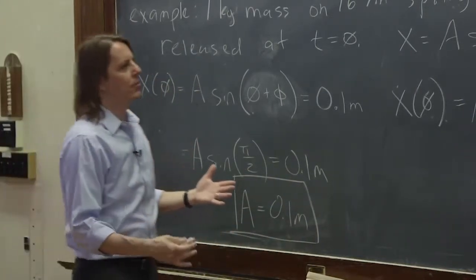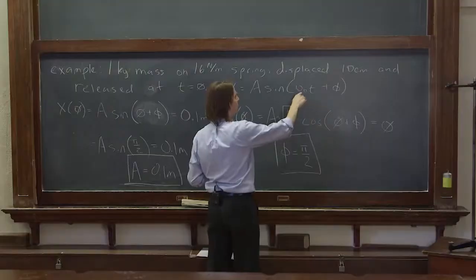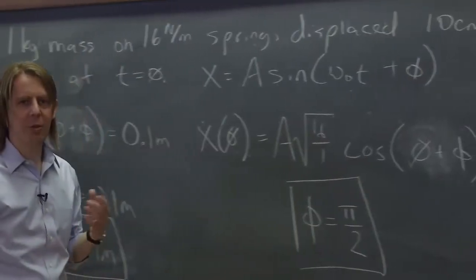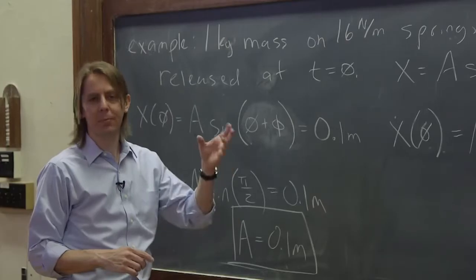And then the whole answer, therefore, is x equals 0.1 meters sine 4t plus pi over two. That would mathematically describe the position of the mass at any time relative to zero.